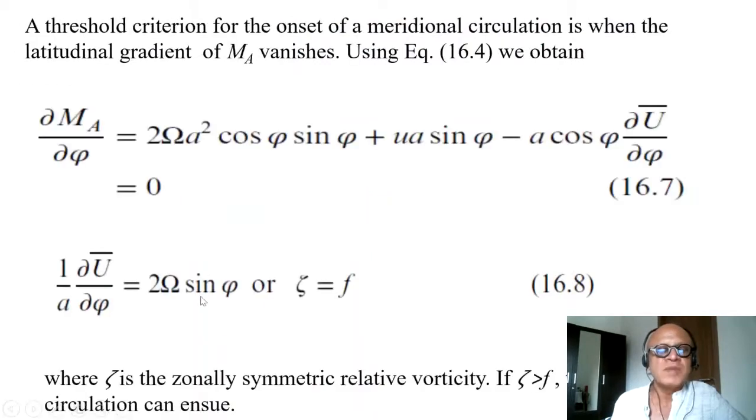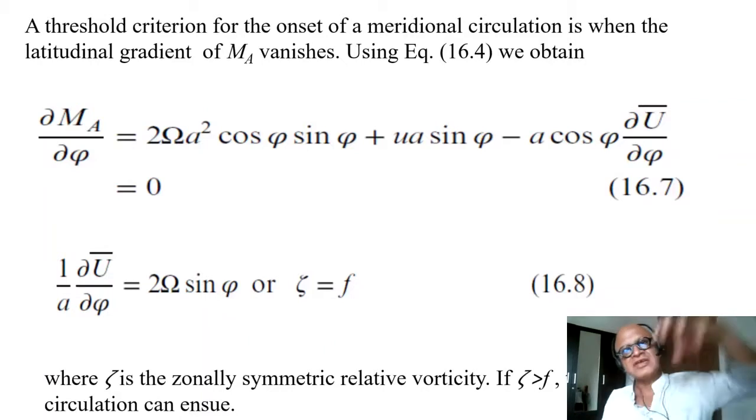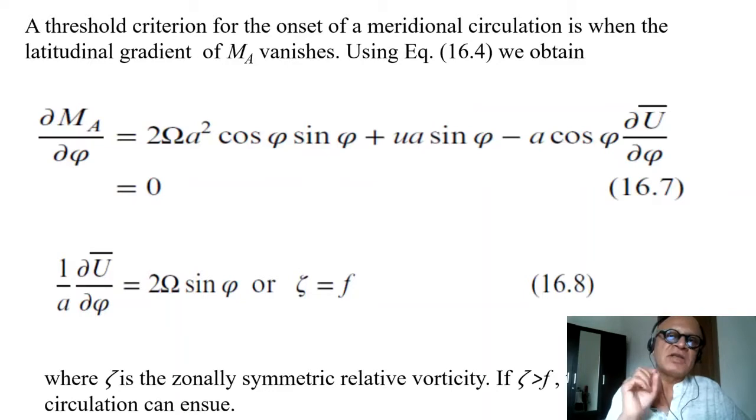Or ζ, the relative vorticity, has to equal the planetary vorticity. This is the key instability condition that will kick in the meridional direct thermal cell. As soon as the heating that is creating vorticity is so strong that it creates relative vorticity greater than the planetary vorticity...